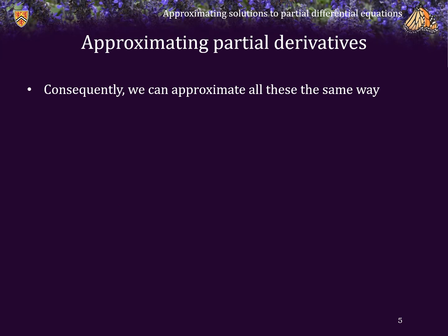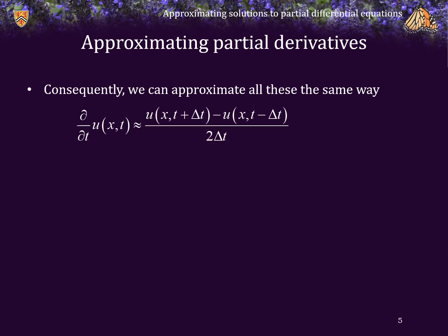Just as the derivative is defined in terms of a limit, we may use this definition to approximate partial derivatives. The partial derivative with respect to T of u at a specific point (T, X) can be approximated by u(T + ΔT, X) minus u(T − ΔT, X), with X held constant, all over 2ΔT.